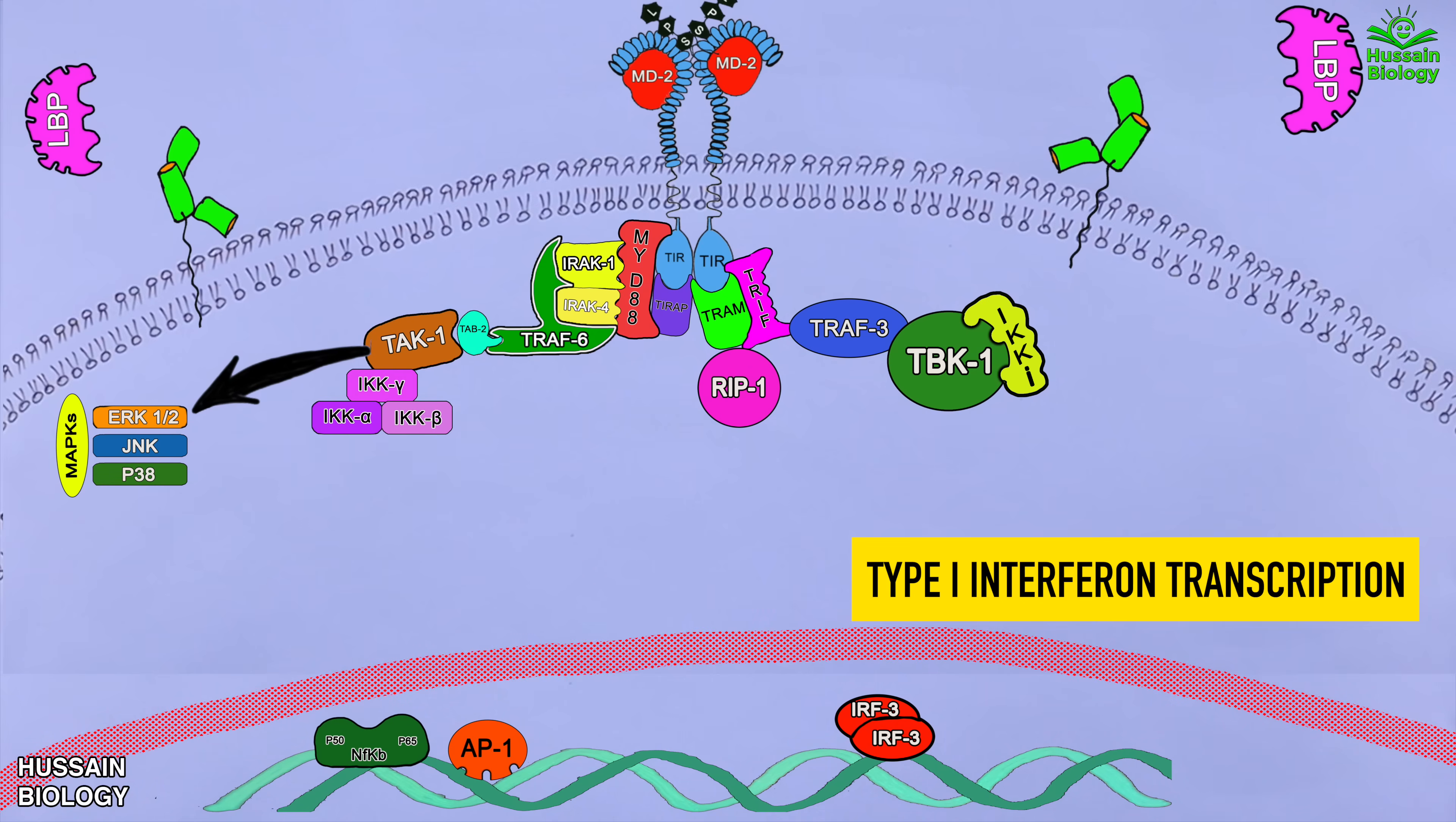But we have still RIP1 activated in the middle of TRIP dependent pathway as shown in the diagram. This RIP1 activates the IKK complex and rest is the same pathway from here while we get the activation of NFKB factor.